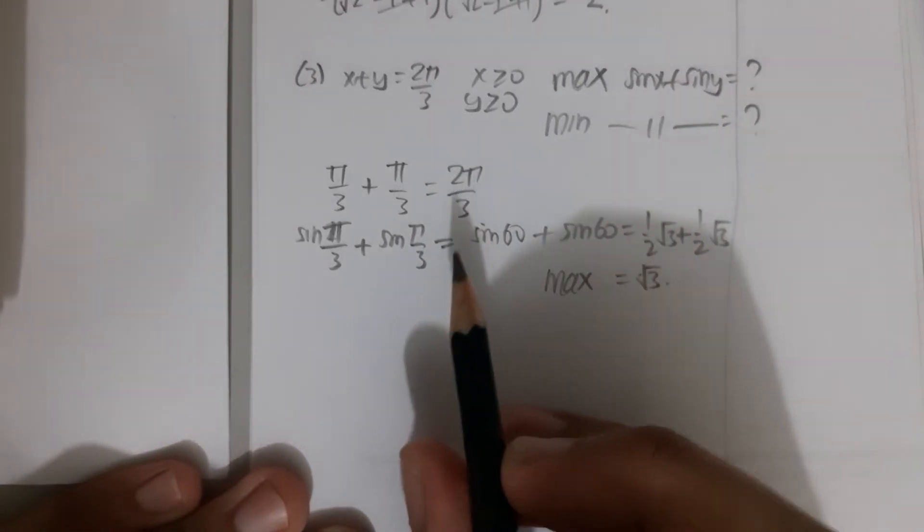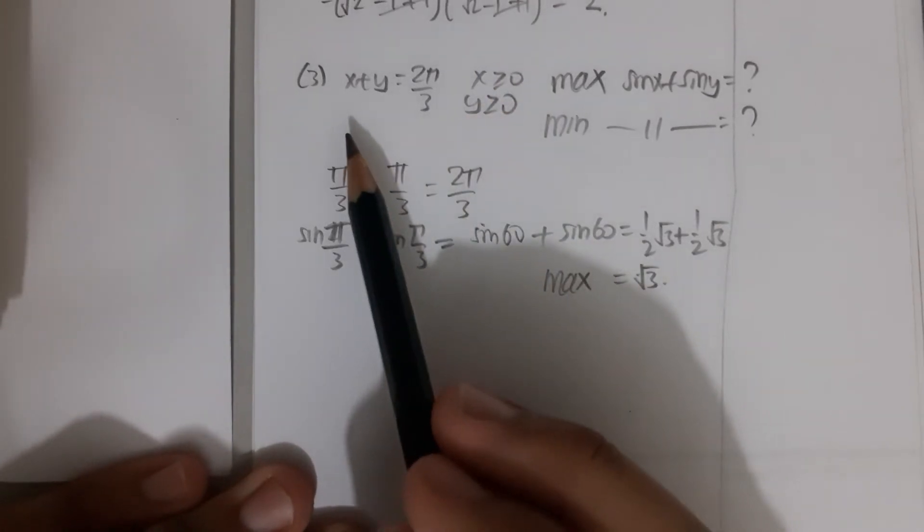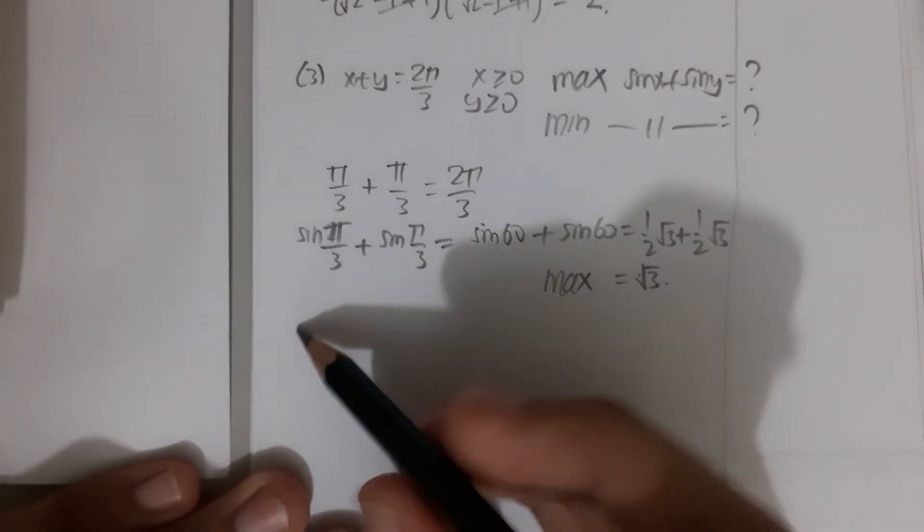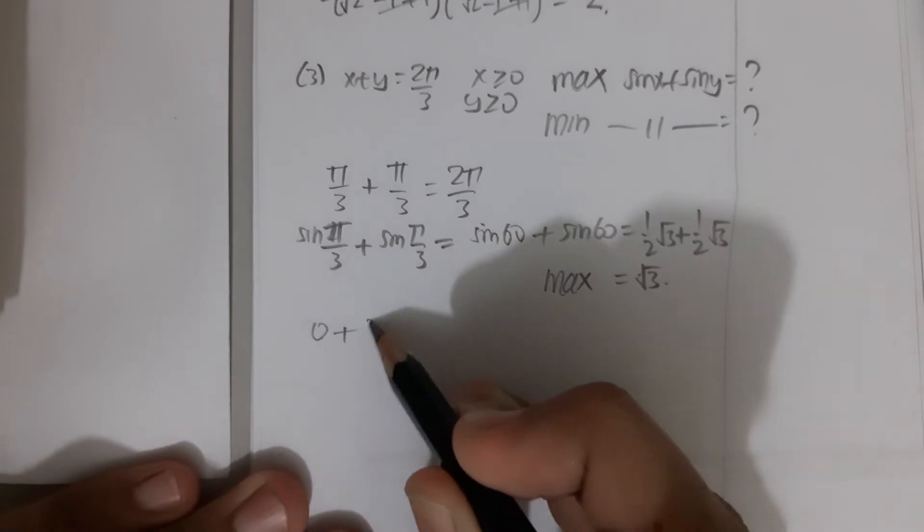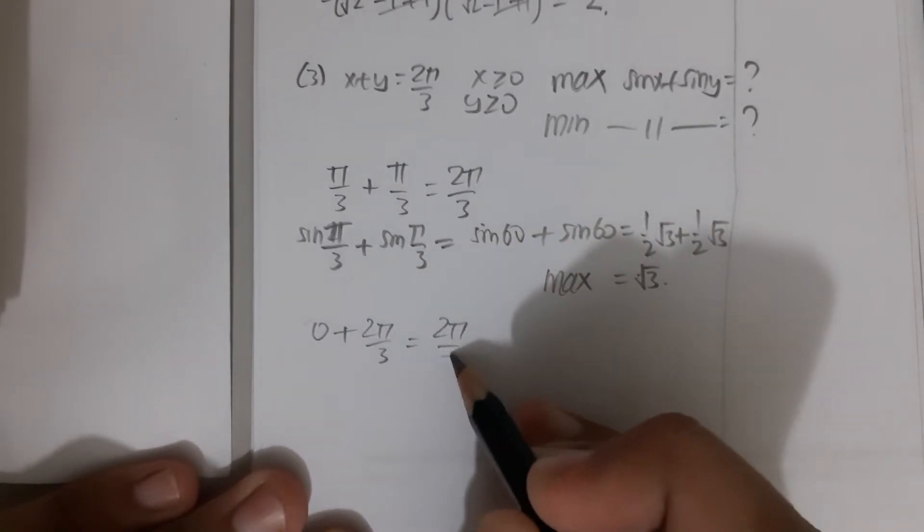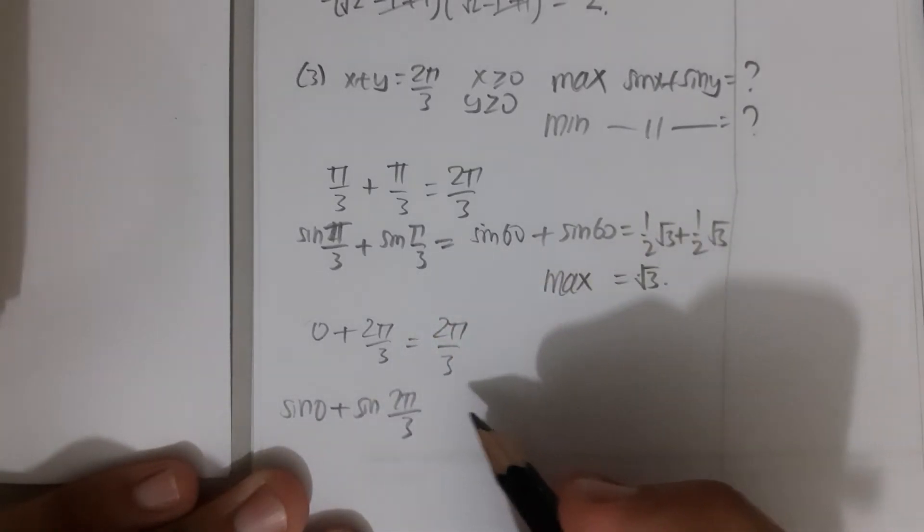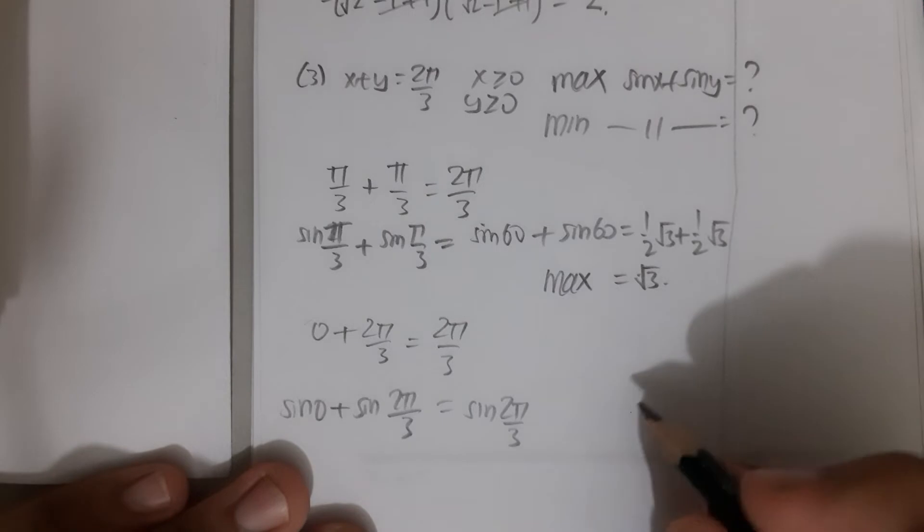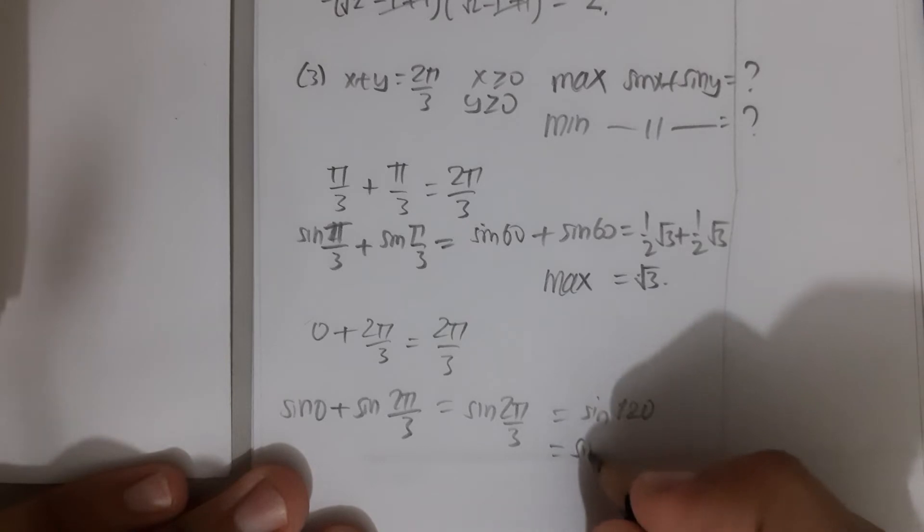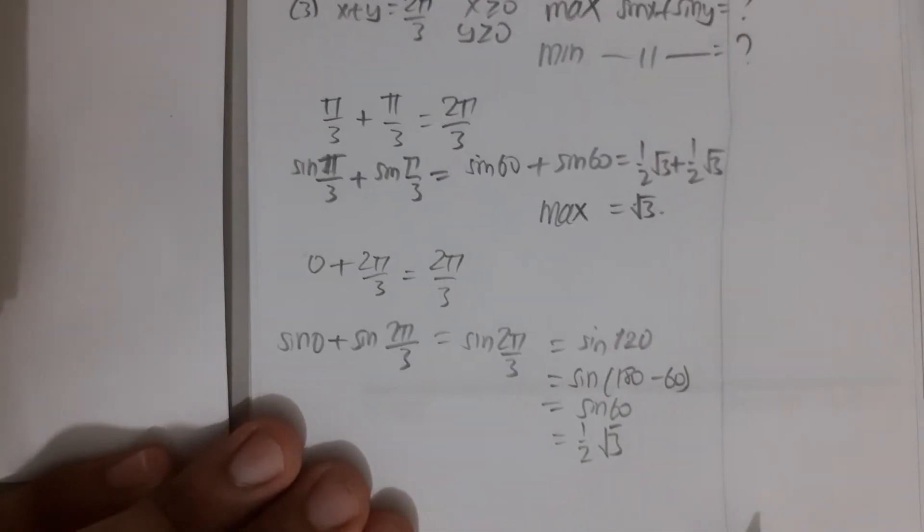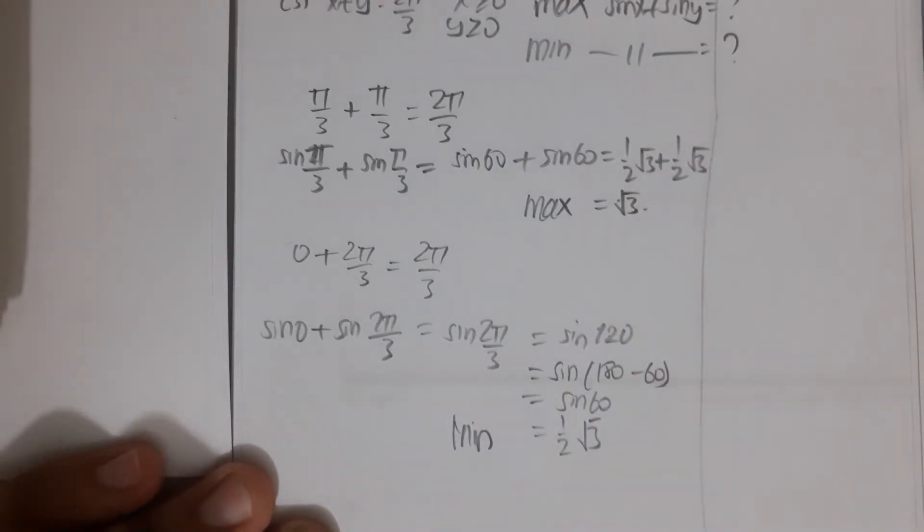Now let's find the minimum. For the minimum, we can make one of them 0. So x = 0 and y = 2π/3, which gives sin 0 + sin(2π/3) = 0 + sin 120°. This is sin 60°, which is (√3)/2. So this is the minimum of sin x + sin y.